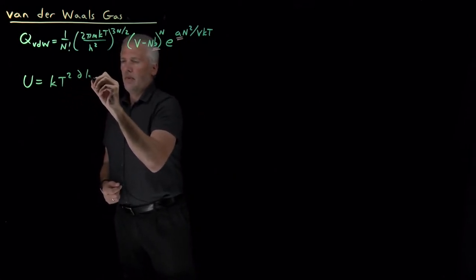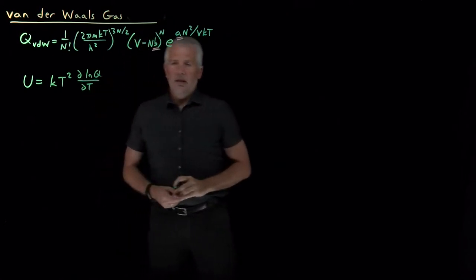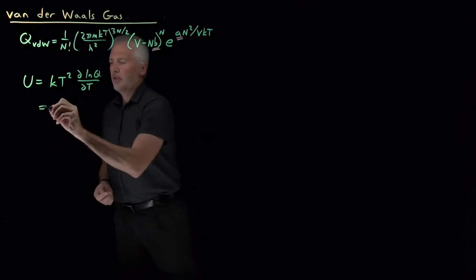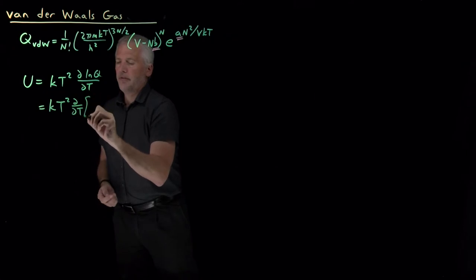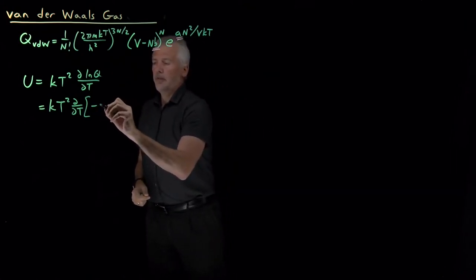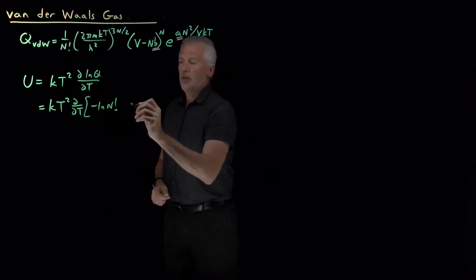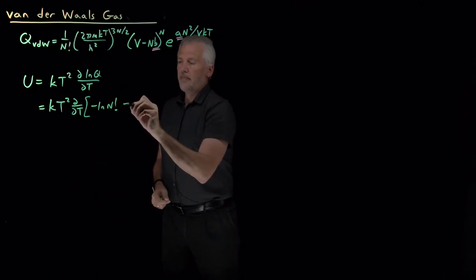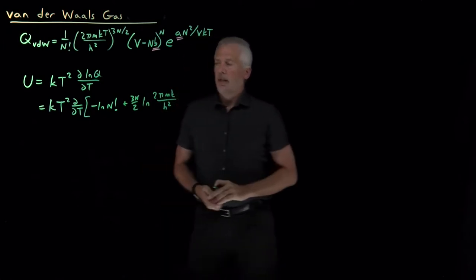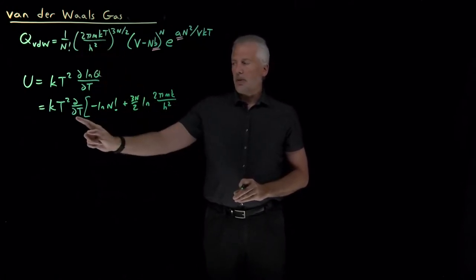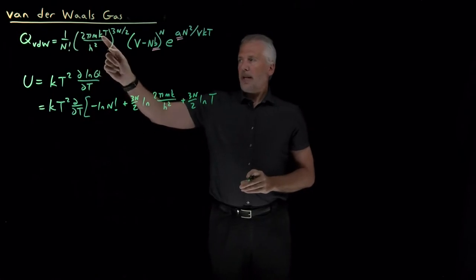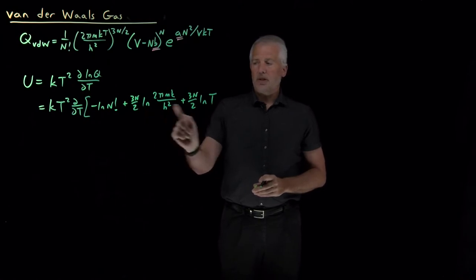We can calculate the internal energy directly from the partition function by taking kT² times d(log Q)/dT. For the van der Waals model, that's kT² times the temperature derivative of the log of this partition function. Breaking down the log into a sum of terms: log of 1/N! is minus log N factorial; the kinetic term gives (3N/2) times log(2πmk/h²) plus (3/2) log T.